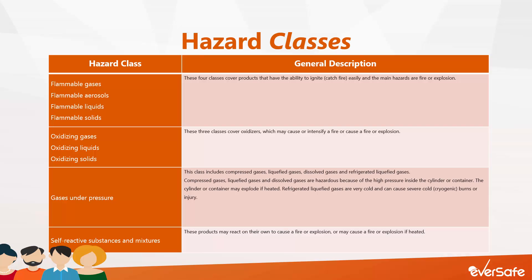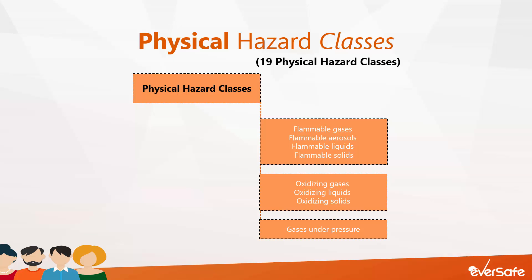Hazard classes are a way of grouping hazardous products together based on their properties. Products with similar properties are grouped in the same classes. Most hazard classes in WHMIS 2015 are common to the GHS classes and are used worldwide by all other countries that have adopted GHS, but some are specific to WHMIS 2015. All the physical hazards covered in the control products regulation that formed part of WHMIS 1988 have been addressed by GHS physical hazard classes, except that the GHS has subdivided the hazards differently.